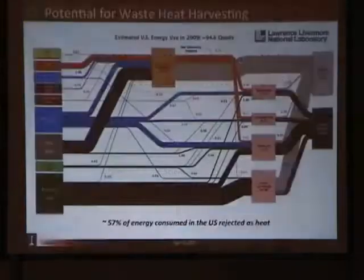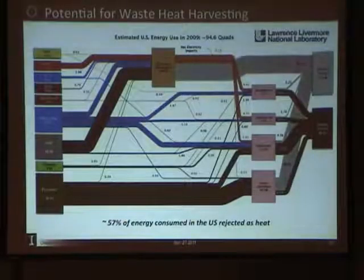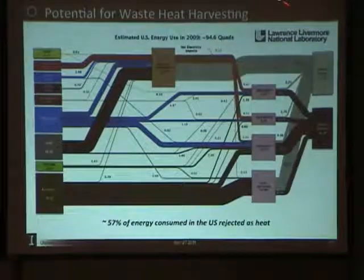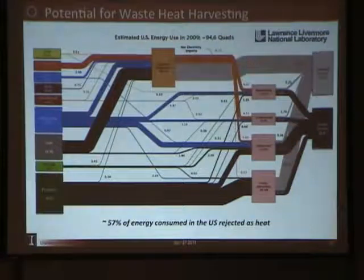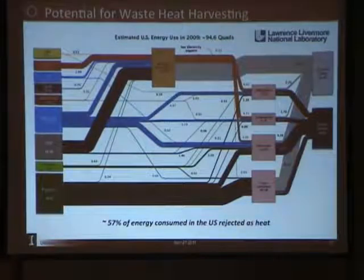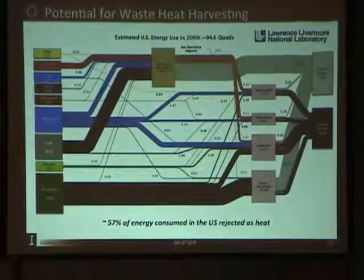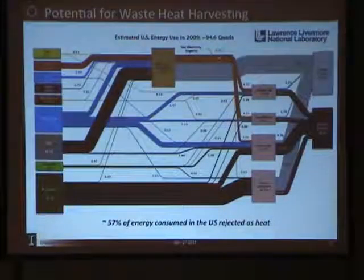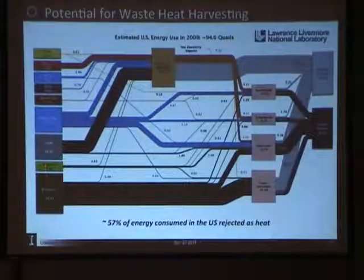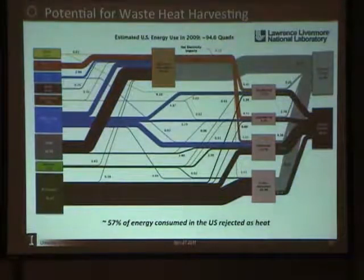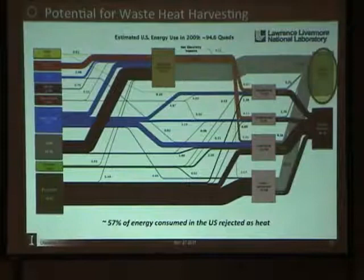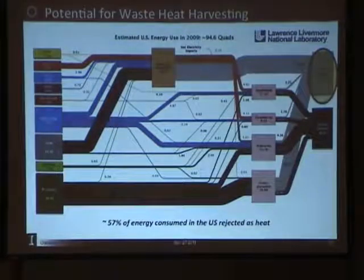The motivation for doing all this is pretty robust. This is an annual energy flow chart put together by the Lawrence Livermore National Laboratory. On the left-hand side are the sources of energy as used in the United States — all domestic U.S. consumption per year. This happens to be data for 2009, and all units are in quadrillion BTUs. The total energy consumption in 2009 was about 95 quads, and 55 quads out of 95 are just being wasted as heat.